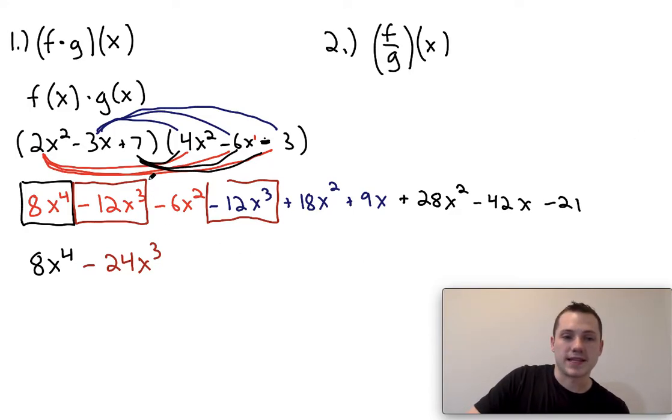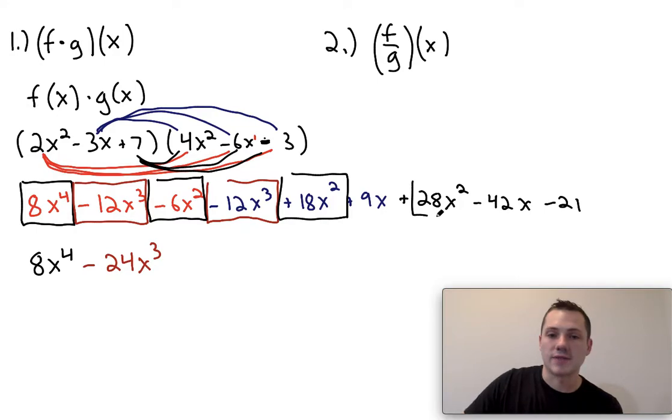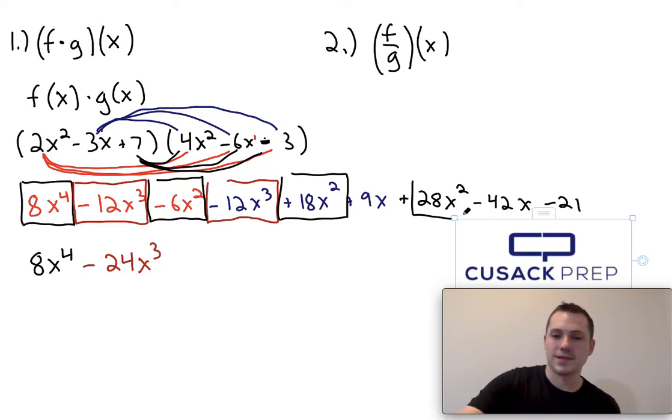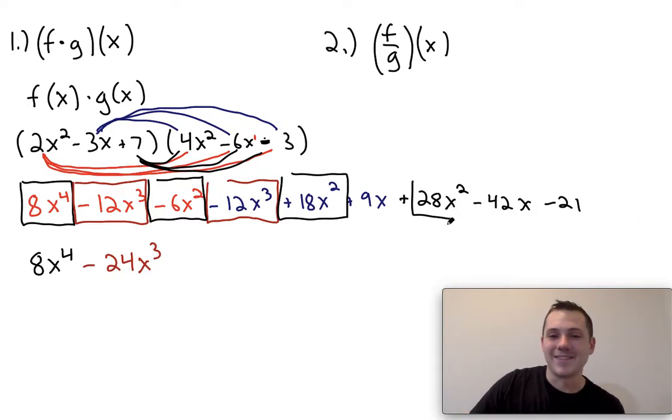Then I'm going to go ahead and circle everything that's x squared. So I have negative 6x squared, I have 18x squared, and I have 28x squared. So 28x squared. Now negative 6x squared plus 18x squared is going to be 12 plus 28x squared is going to be plus 40x squared.